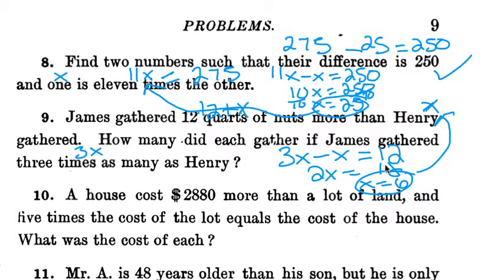The question actually asks how many did each gather, so we need both. Henry gathered 6, James gathered 12 more, so 6 plus 12, James got 18. And you can check that: James gathered 12 quarts more, so is 18 twelve more than 6? Yes, it is. And is 18 three times 6? Yes, it is. So that one works out. You won't go wrong as long as you're going in here and double-checking your work.